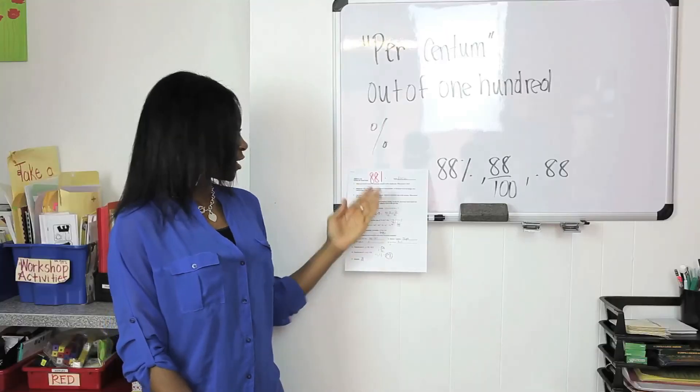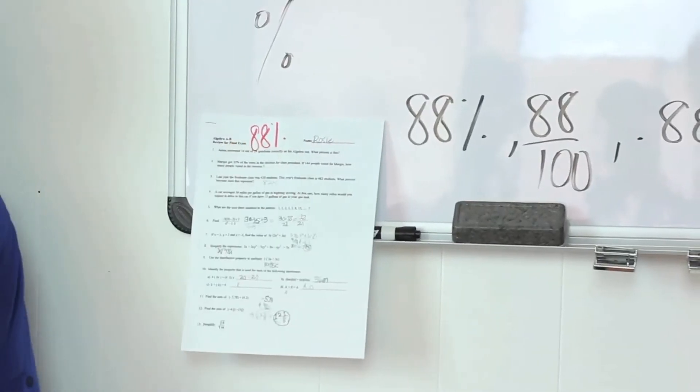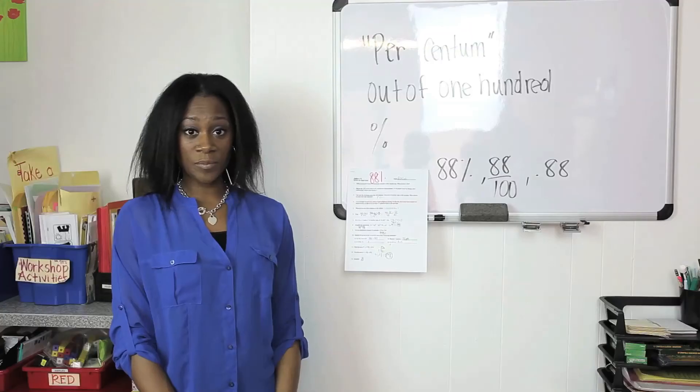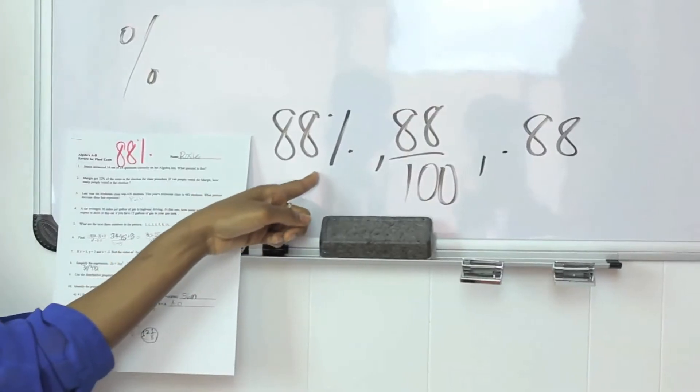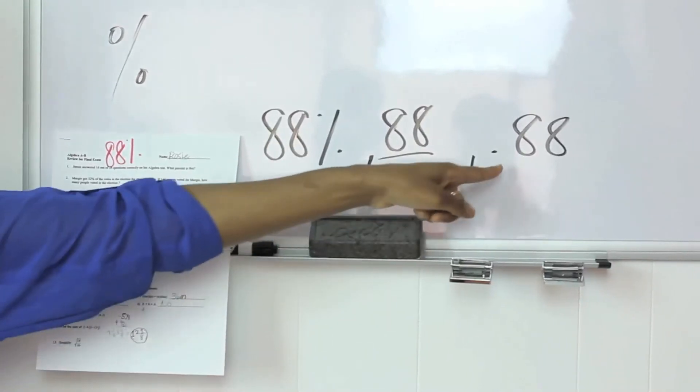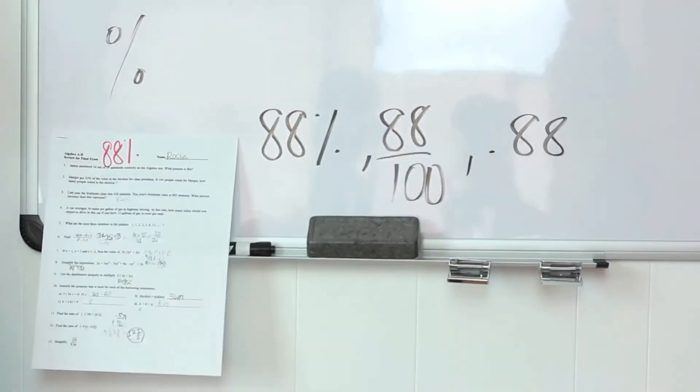Now let's look at Rosie's test. She got an 88 out of 100. Now you can write this percentage as 88%, 88 out of 100, or in decimal form, 0.88. They all equal 88%.